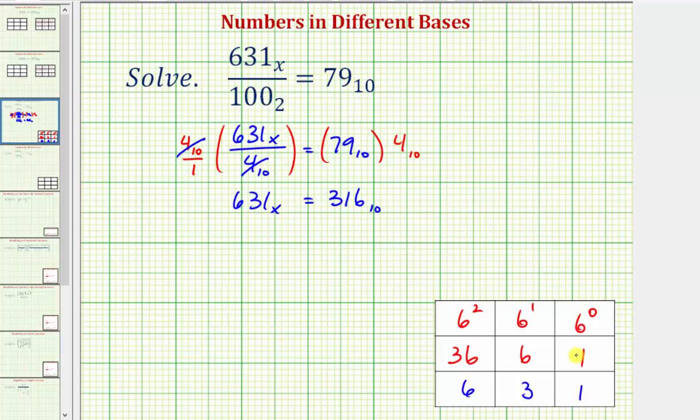So if we have 631 base 6 in base 10, we would have 6 times 36 plus 3 times 6 plus 1 times 1. So we have 631 base 6 is equal to 6 times 36 equals 216 plus 3 times 6 is 18. Of course, 1 times 1 is 1.